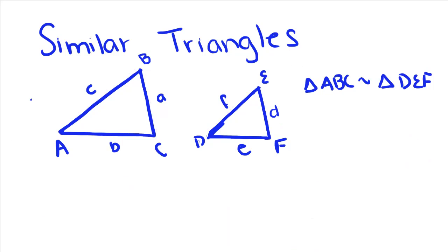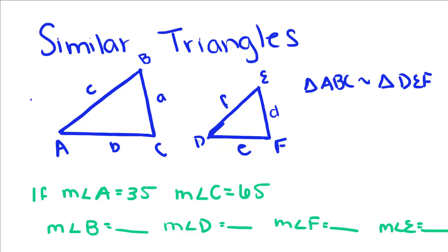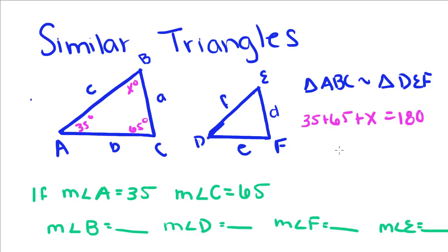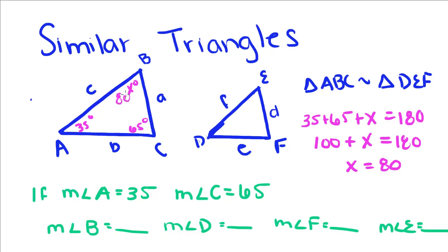So we still have these two triangles, but now we know that the measure of angle A is 35, the measure of angle C is 65, and we have to find the measure of all the other angles. So the first thing we're going to do is find the measure of angle B, and we can do that using our rules of the interior angles of triangles. So 35 plus 65 plus X is equal to 180, because all the angles in a triangle always add up to 180. So 35 plus 65 is equal to 100, plus X is equal to 180, so X is equal to 80. That means B is equal to 80.